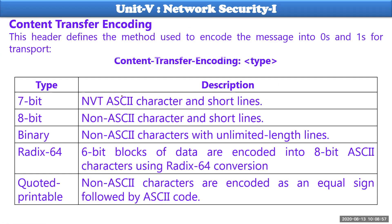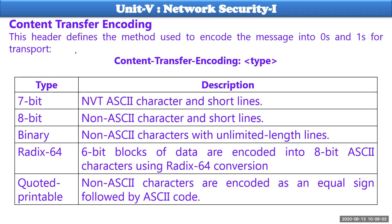Today we would like to learn about how content transfer encoding happens and what are the premises to be taken into consideration. Content transfer encoding specifies its type, which might be 7-bit form, 8-bit form, binary form, RADIX64 form, or quoted printable form. Right now in general email conversations we are using quoted printable form only.